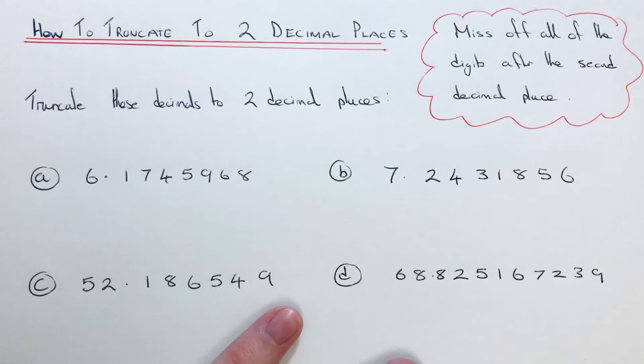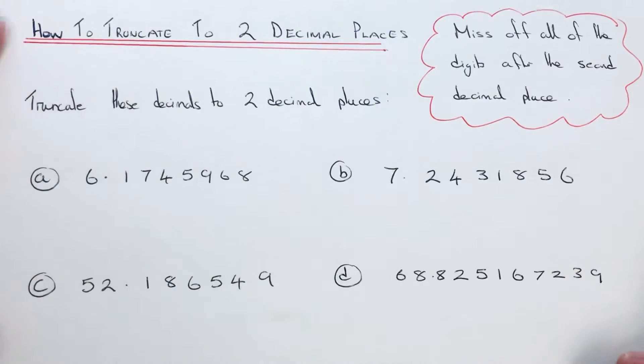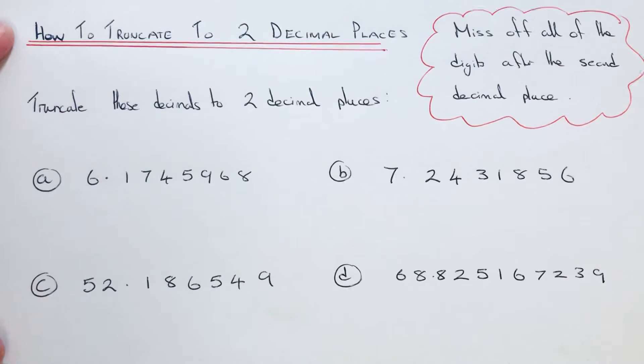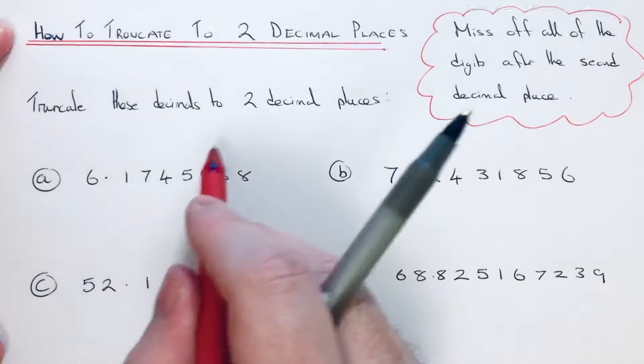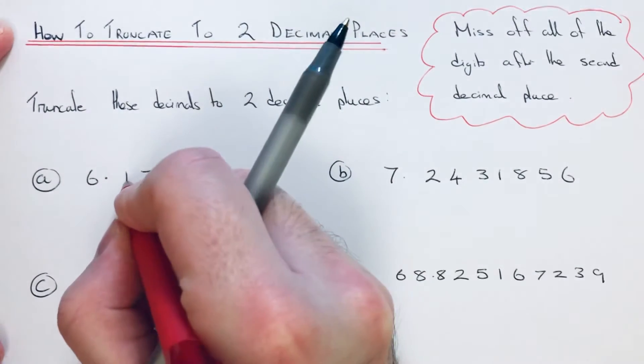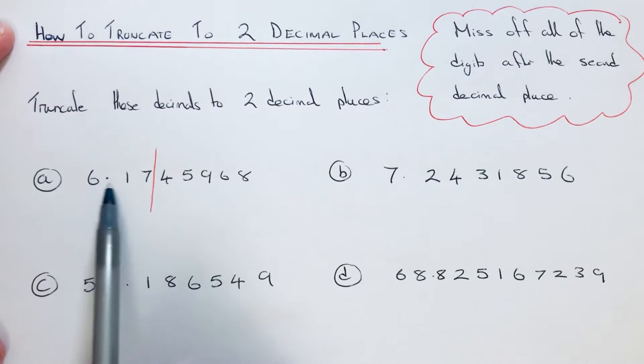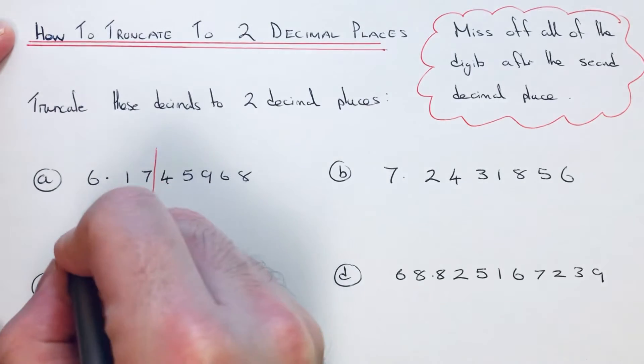After the second number after the decimal point, let's truncate all these decimals that we have here to two decimal places. Our first one then: we need to put a line in two numbers after the decimal point. This is where we cut the decimal off, and we just copy down the digits before this line.